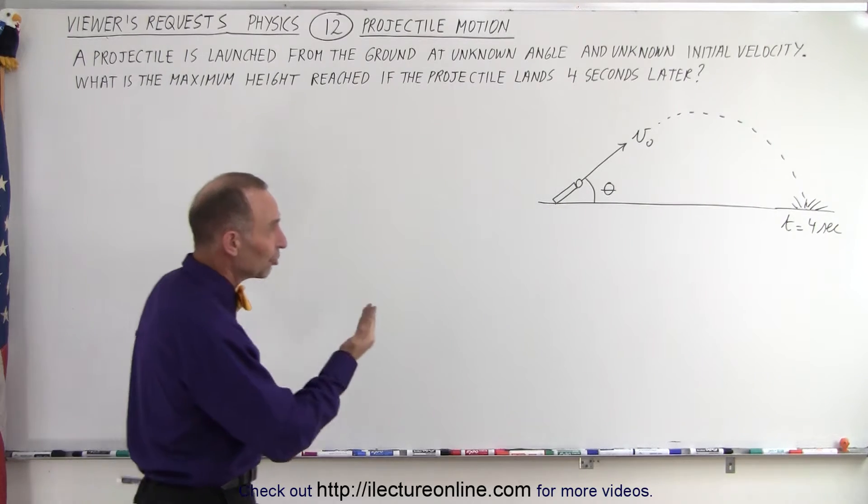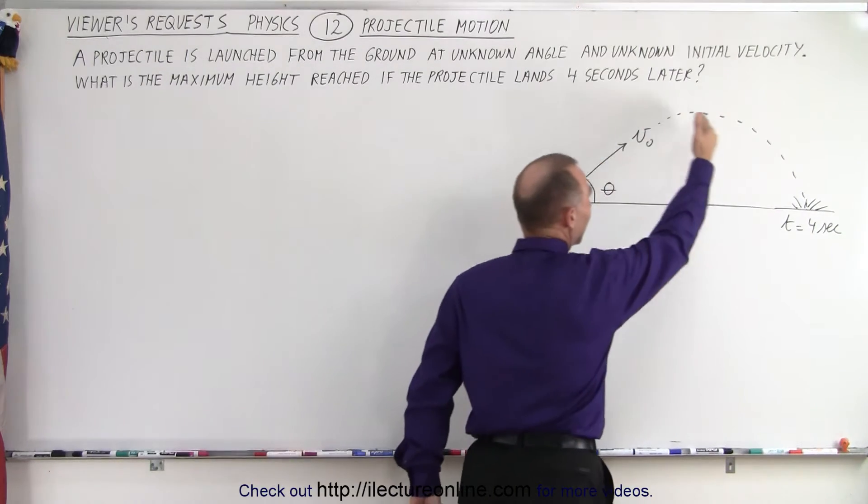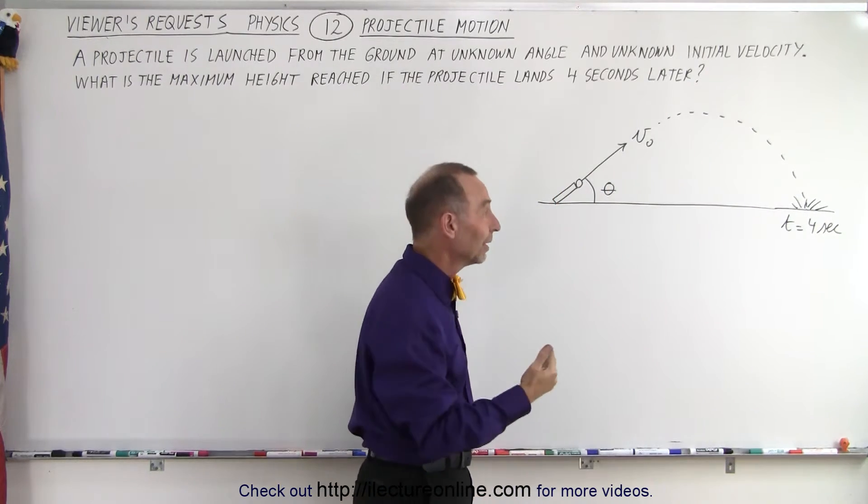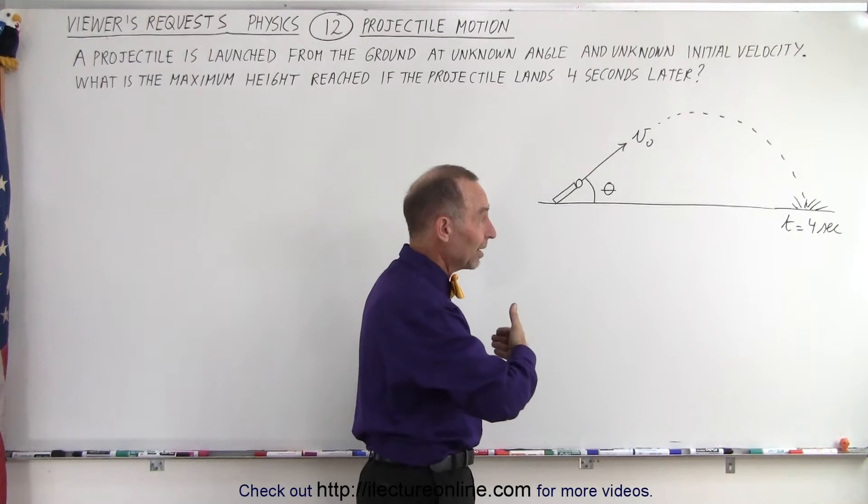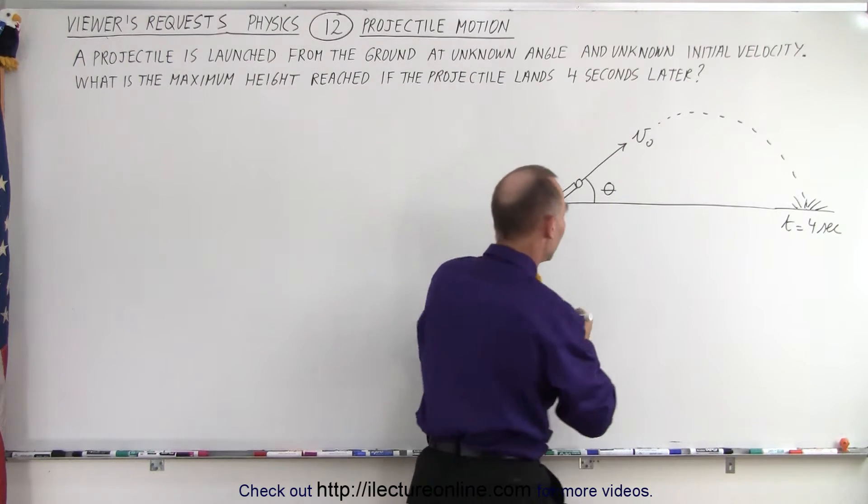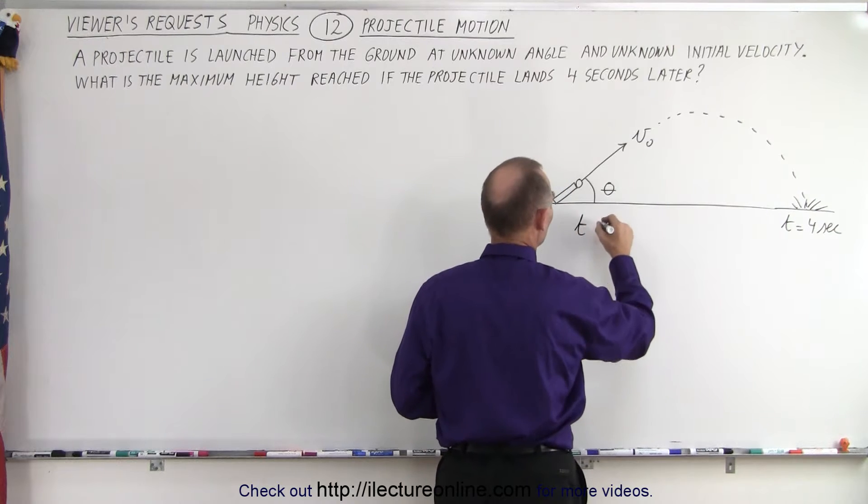Well, first of all, in a projectile, if the total time that it takes to reach the ground is four seconds, then it will reach the maximum height in two seconds, because the amount of time that it takes to go up is exactly the same amount of time as it takes to go down.